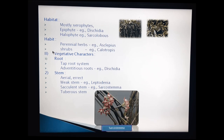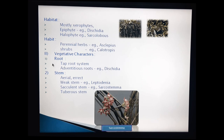Going to the vegetative characteristics — root, stem, and leaves. Root: these are dicotyledons, so these plants have a taproot system. Only Dischidia consists of adventitious roots, because as mentioned in the habitat, Dischidia is grown as an epiphytic plant — that is why it has adventitious roots.